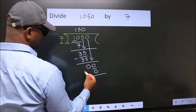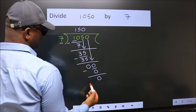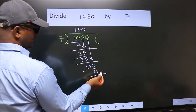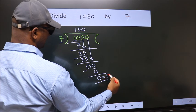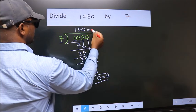Now we subtract. We get 0. No more numbers to bring it down. So we stop here. This is our remainder. This is our quotient.